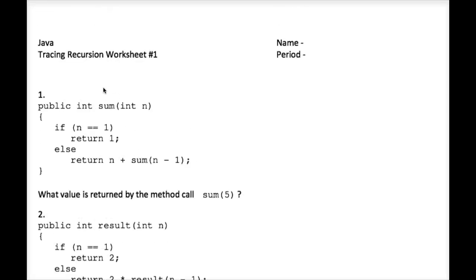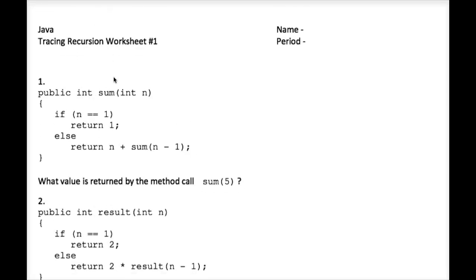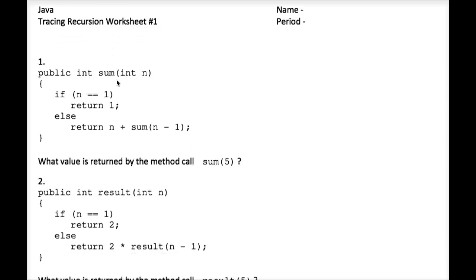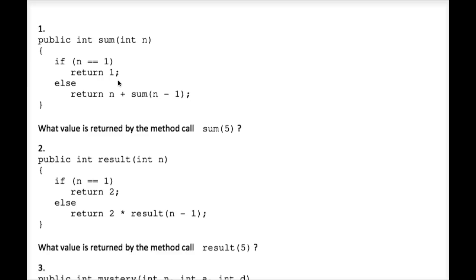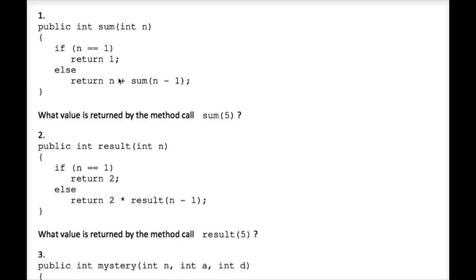Let's execute some exercises from tracing recursion worksheet number one. We have a recursive method called sum — you can see it calls itself. Let's see what happens when we call sum with the parameter five.